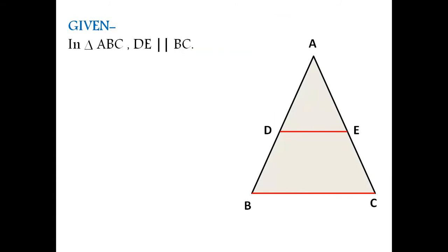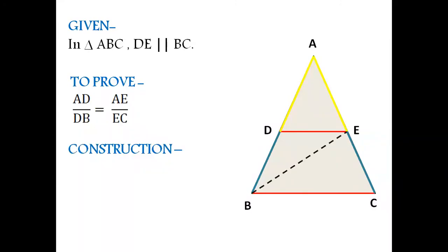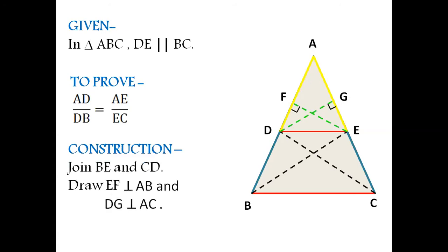Next is what to prove which is AD by DB is equal to AE by EC. We need to do some construction. Join BE and CD. Then draw EF perpendicular to AB and DG perpendicular to AC. The figure will finally look like this.